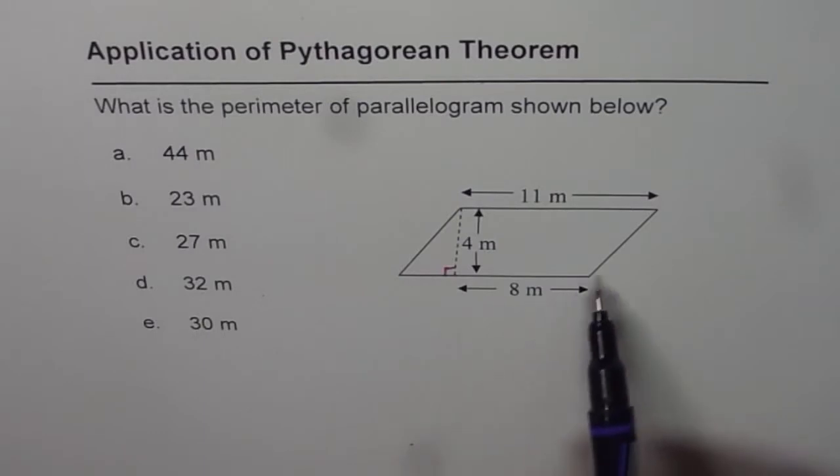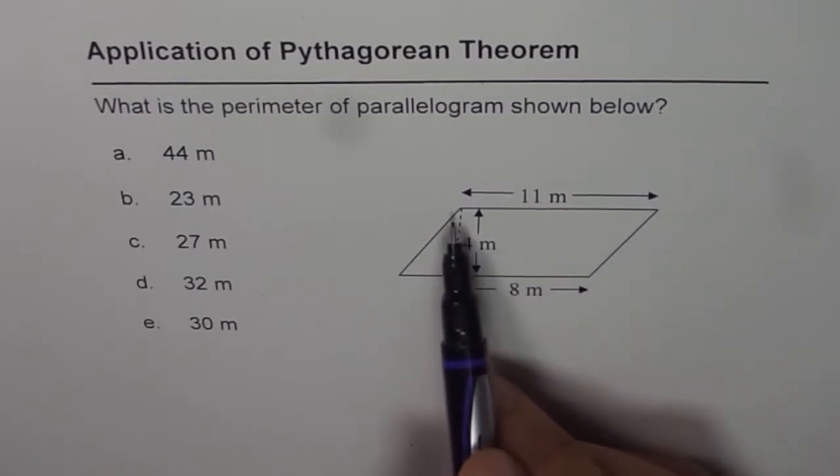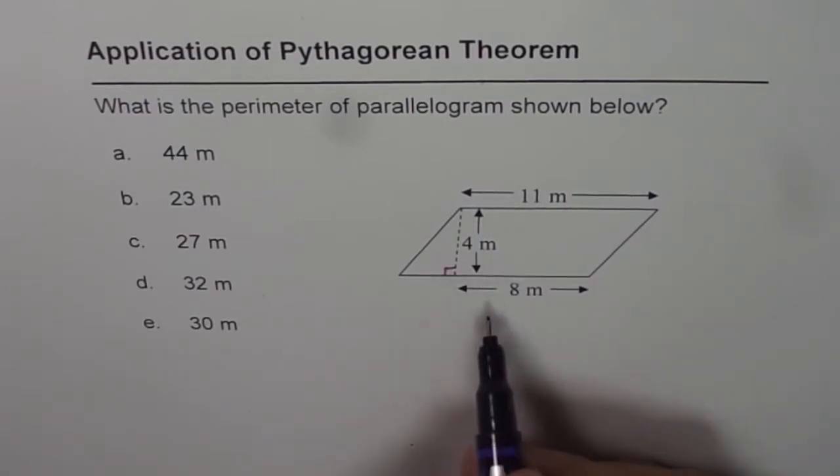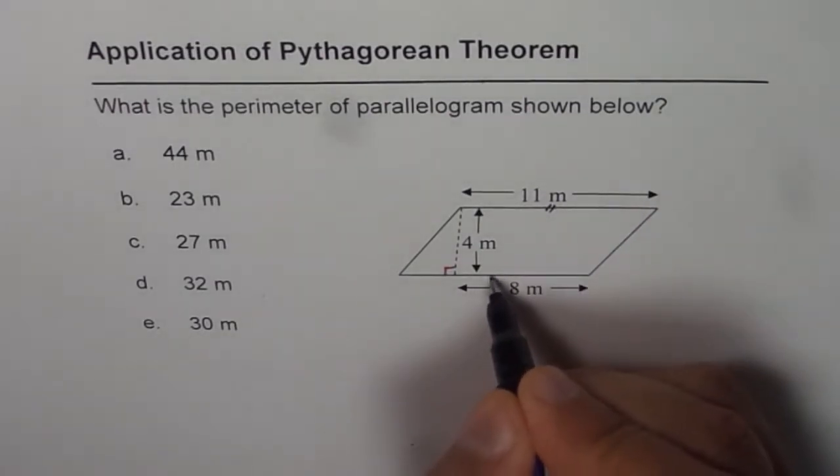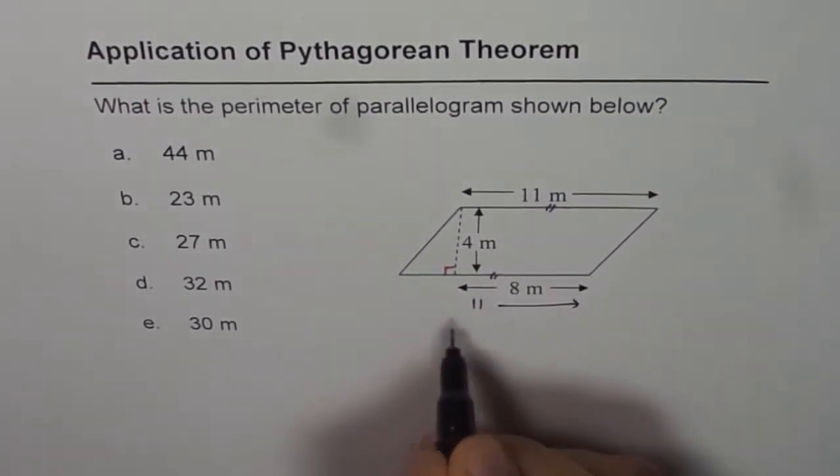Perimeter means sum of all the sides. So basically we need to add up four sides of the parallelogram. We are already given one of the sides. The other one should be equal to the given side. So this is also 11 for us.